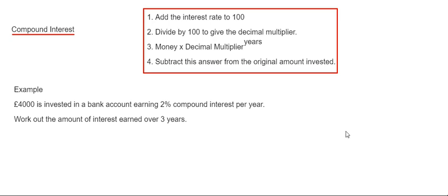The best way to do it is to follow the four steps in the red box here. The first step is to add the interest rate to 100. Step 2, we divide by 100 to give the decimal multiplier.